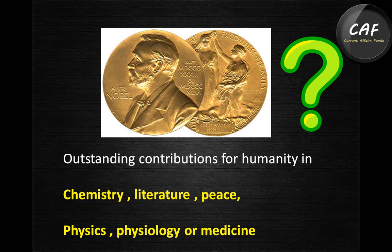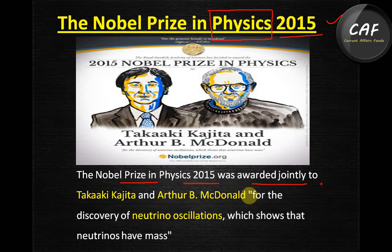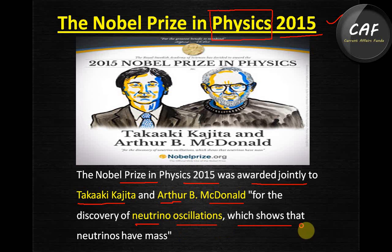The Nobel Prize in Physics 2015 was awarded jointly to Takaaki Kajita and Arthur B. McDonald for the discovery of neutrino oscillations, which shows that neutrinos have mass. Both Takaaki Kajita and Arthur B. McDonald have won the Physics Nobel Prize jointly.